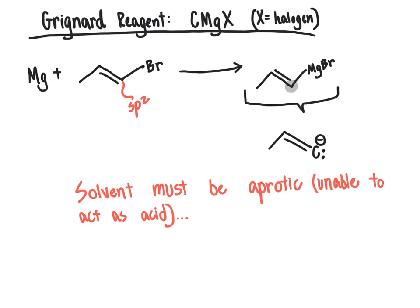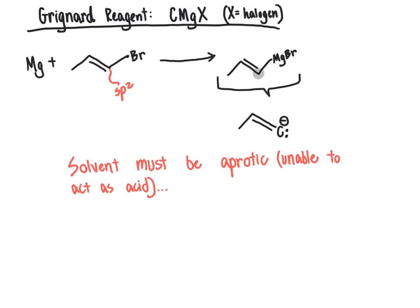And so if you had a solvent there, such as water or methanol or something that could readily donate a proton, then what will happen is that your carbanion will act as a base to deprotonate the water or whatever protic solvent you were using here.